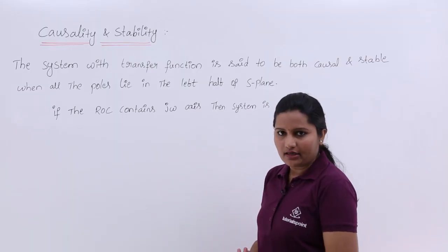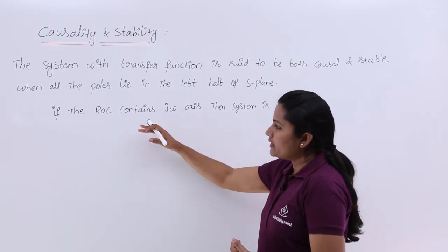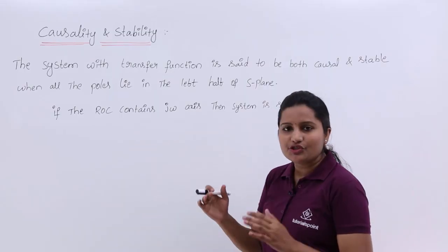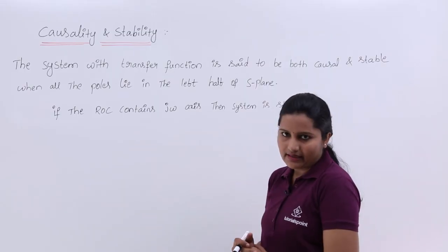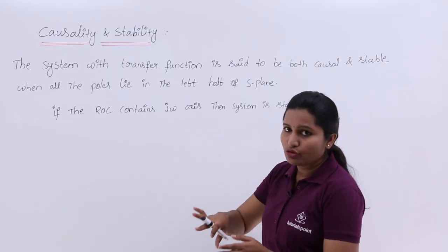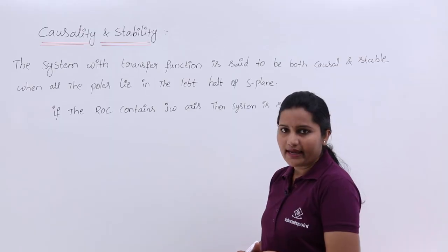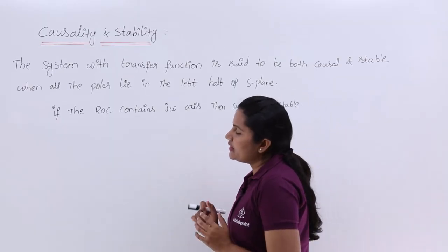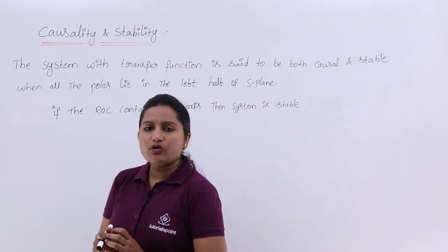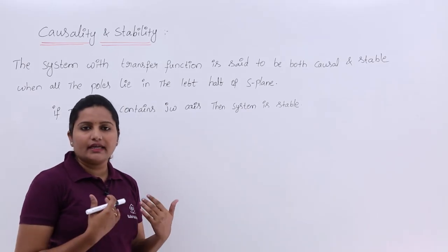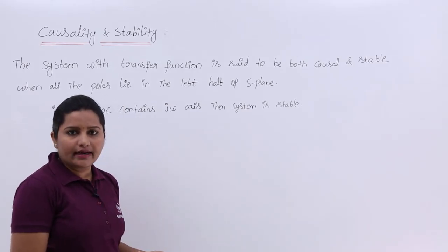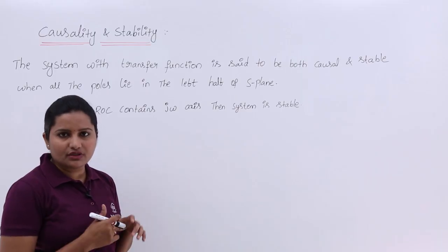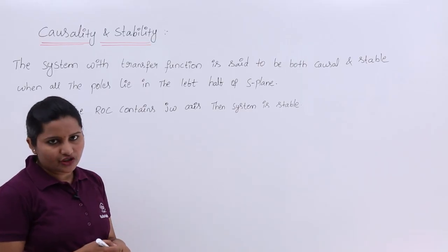The poles must have negative real parts. The condition for stability is that if the ROC contains the jω axis — if the ROC includes the jω axis — we can definitely say the system is stable. Here I will give you combinations showing how we can determine whether the system is stable or causal according to the given transfer function.